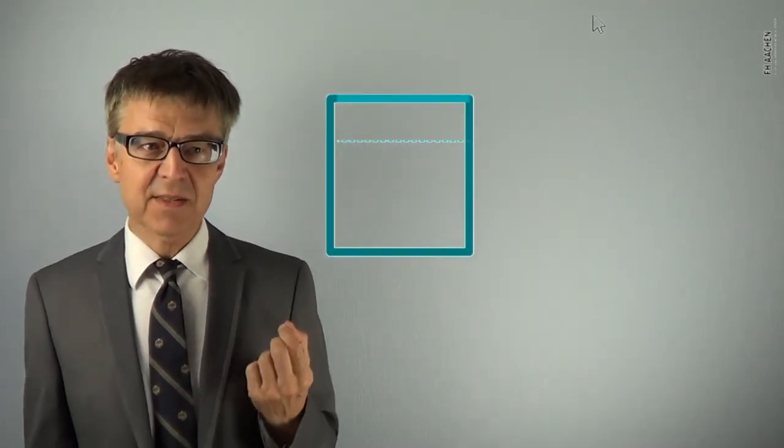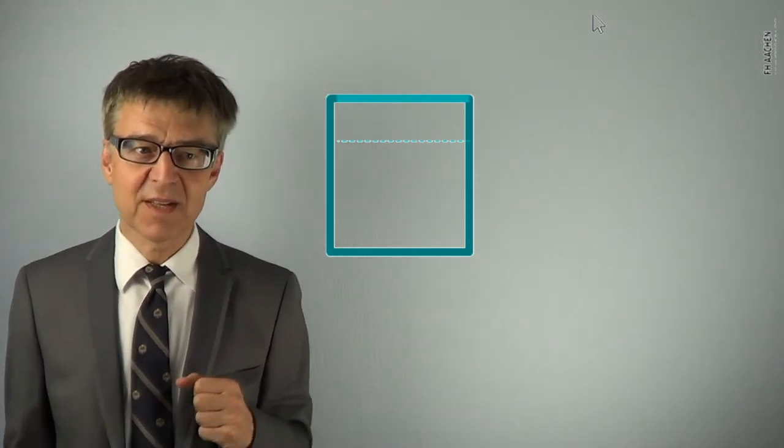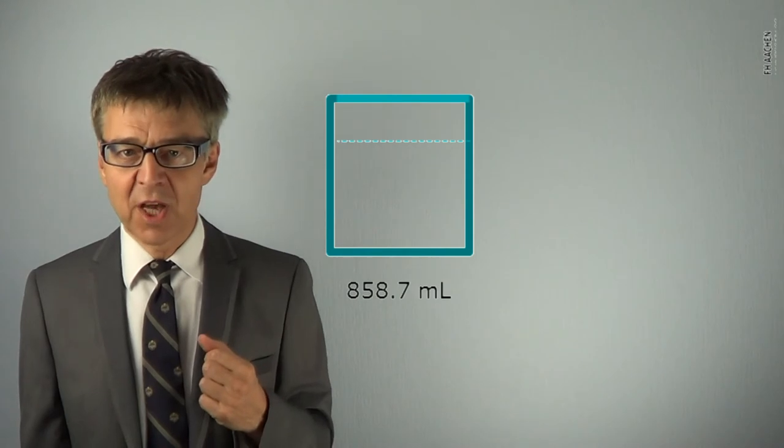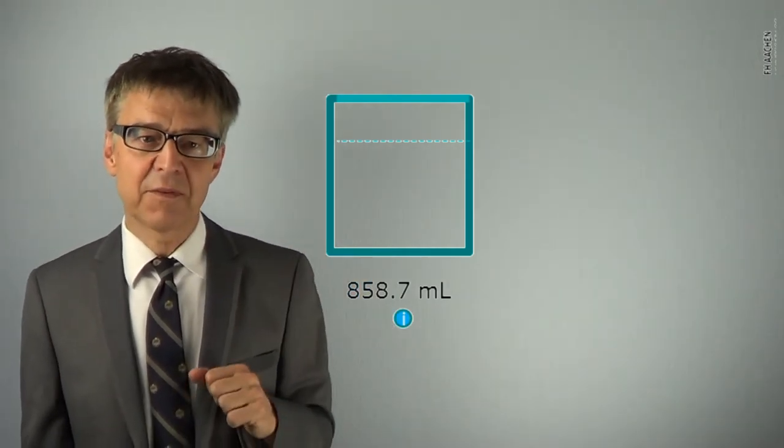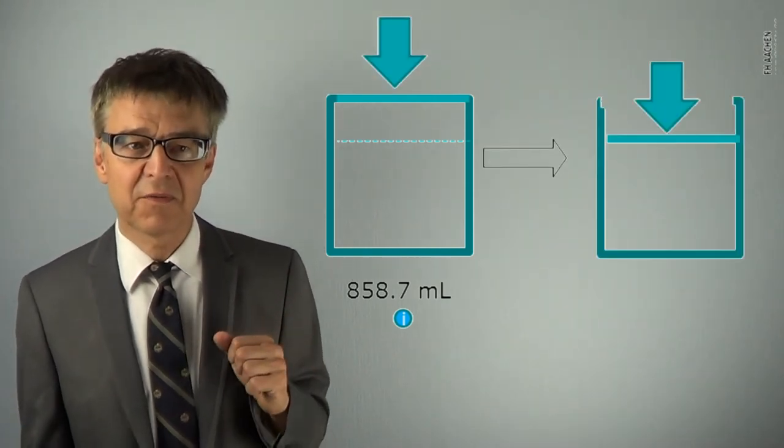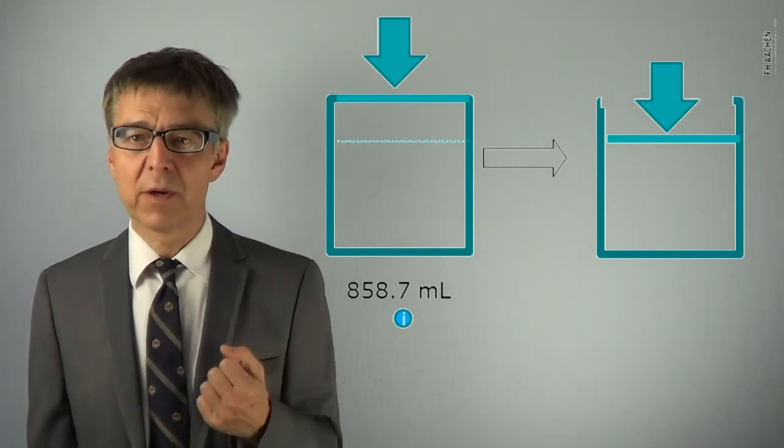In thermodynamics, pressure-volume work, or PV work, is very important. Any system that expands or compresses with an external pressure present exchanges PV work with the surroundings. If we compress air from 858.7 milliliters to 855.8 milliliters, the surroundings do work on the system.